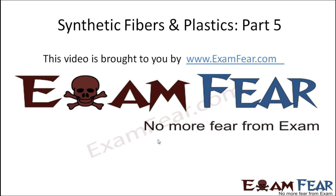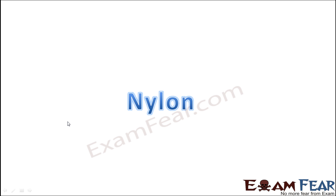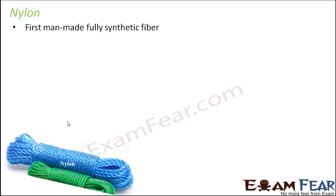This video on synthetic fibers and plastics part 5 is brought to you by examfier.com. The next synthetic fiber we will talk about is nylon. Nylon is the first man-made fully synthetic fiber. In the case of rayon, it was semi-synthetic because it was obtained from a naturally occurring polymer called cellulose from the wood pulp of plants. But in the case of nylon, it is fully synthetic.